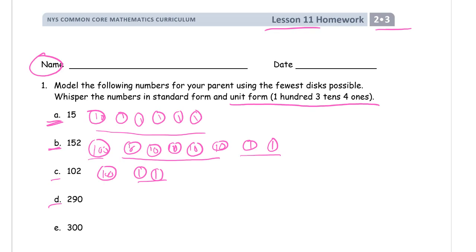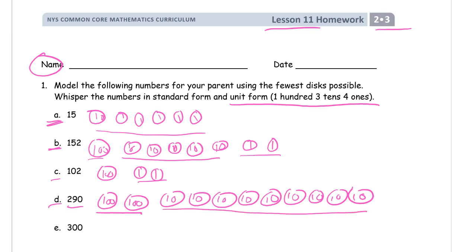This one here is going to take 2 hundreds and it's going to take 9 of the tens. 1, 2, 3, 4, 5, 6, 7, 8, 9. So to say this number in standard form, it's 290. And in unit form, it's 2 hundreds, 9 tens.